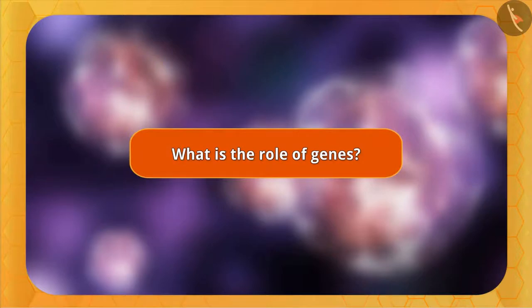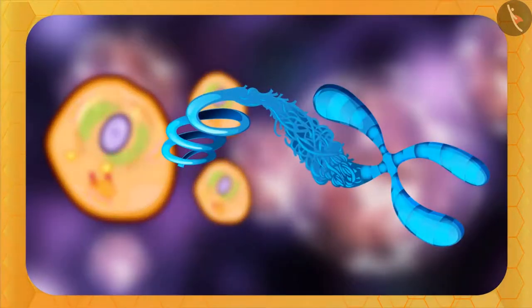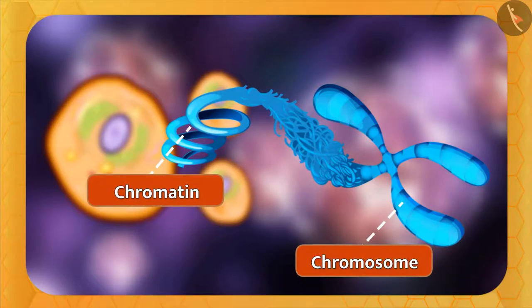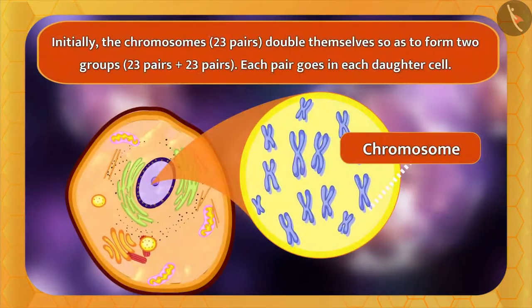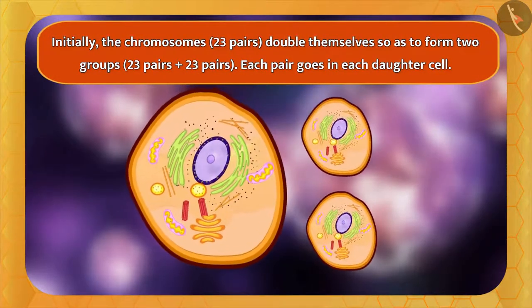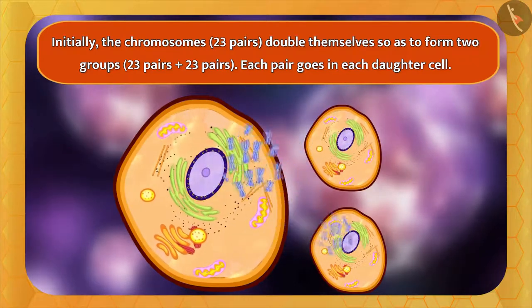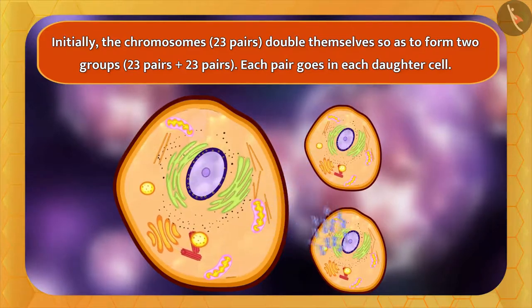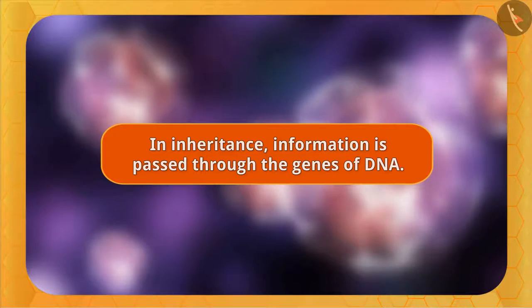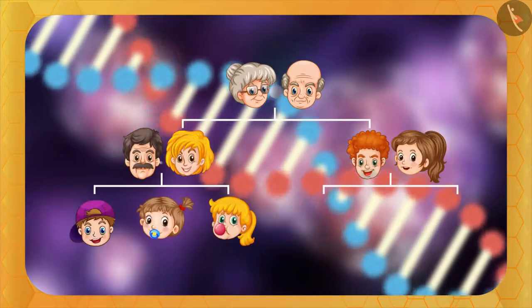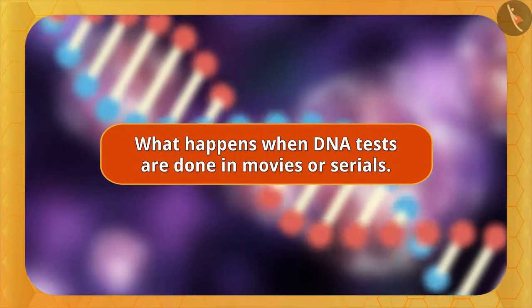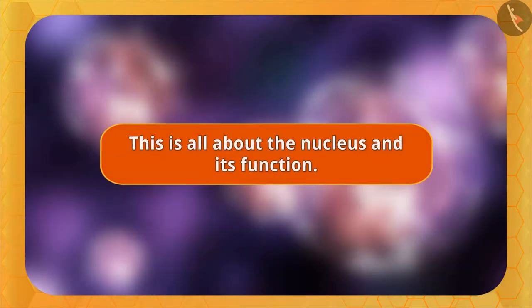When a cell divides, the chromatin gets organized into a structure called chromosome. When there are a lot of chromosomes visible in the nucleus, the cell is about to divide. When the cell divides, part of the chromosome migrates to the new cell. In this way, through the genes of DNA, instructions pass into the new cell — this is inheritance. Similarly, in children, information comes through the genes of DNA from their parents.